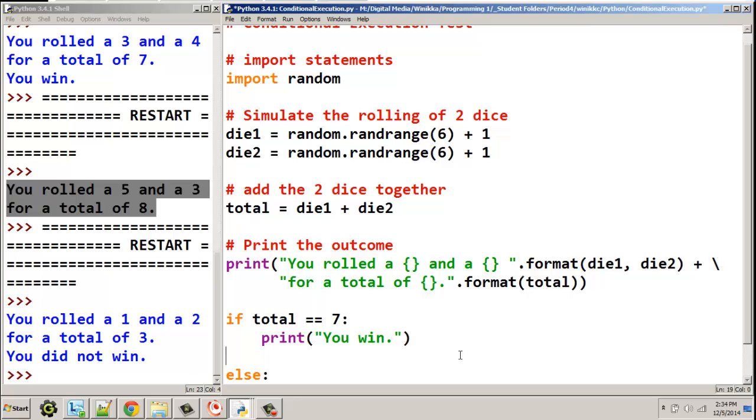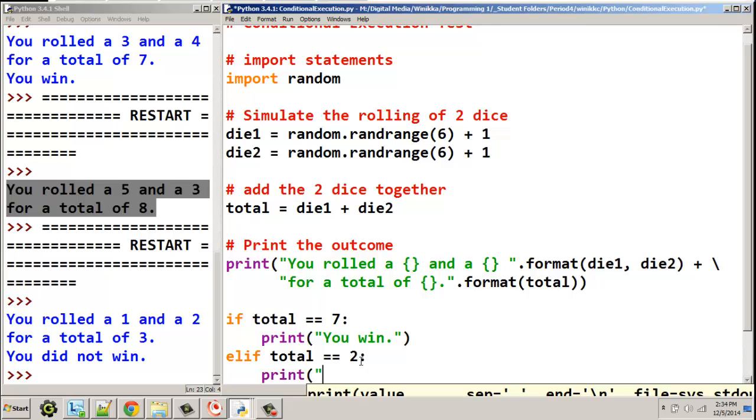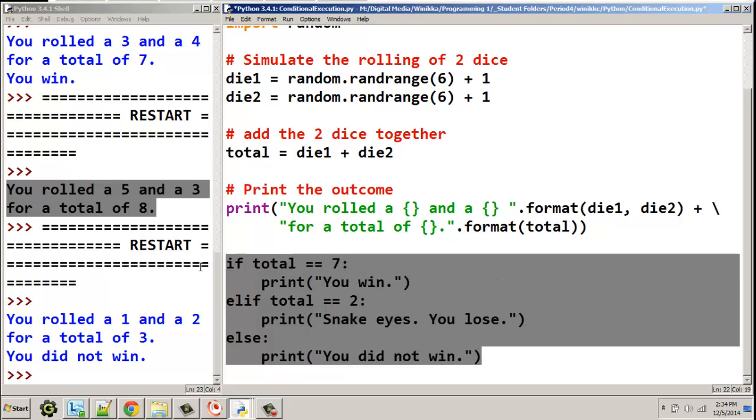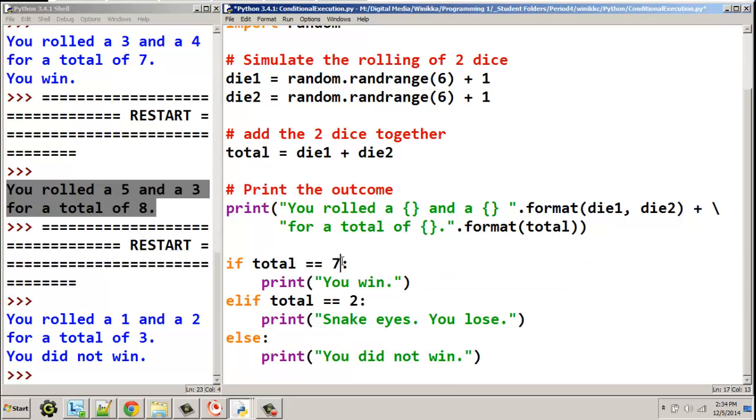So what we're going to do is we're going to write a new statement called elif. Now, elif means if the first one was not true, is this one true? So we're going to put elif total is equal to 2. And we're going to print. In this case, they call that snake eyes. You lose. All right. Game over, man. All right. So now we have three possible outcomes. It's either a 7 or it's a 2 or it's something else. That makes sense, right? If you read it, it almost speaks of itself.